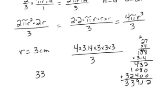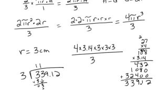But I still need to divide by 3. So I have 339.12 divided by 3. How many 3s in 3? There's 1. Multiply, subtract, get 0. Bring down the next 3. How many 3s in 3? 1. 3 times 1 is 3. Subtract and get 0. Bring down the next number. How many 3s in 9? 3. 3 times 3 is 9. Subtract and get 0. My decimal is just going to go up there in my answer.